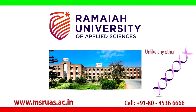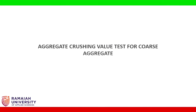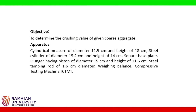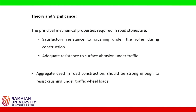MS Ramaya University of Applied Sciences. In this experiment, we are determining the crushing value of a given coarse aggregate. The apparatus includes a cylindrical measure of diameter 11.5 cm and height 18 cm, a steel cylinder of diameter 15.2 cm and height 14 cm, a square base plate, a plunger having a piston of diameter 15 cm and height 11.5 cm, a steel tamping rod of 1.6 cm diameter, a weighing balance, and a compressive testing machine (CTM).